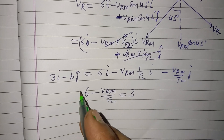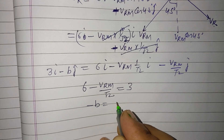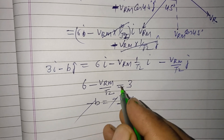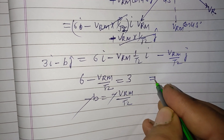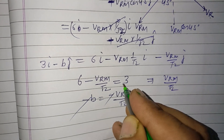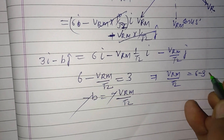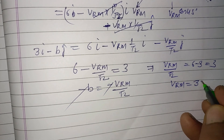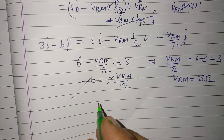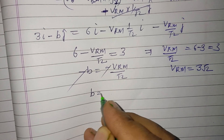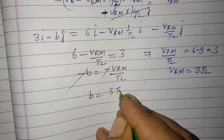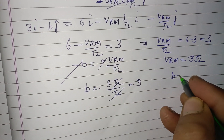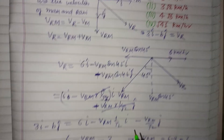Comparing both vector components: from the i-cap component, 6 minus b_RM upon root 2 equals 3, so b_RM upon root 2 equals 6 minus 3, which is 3. Therefore, b_RM equals 3 root 2. Substituting this value back, b equals b_RM upon root 2 equals 3 root 2 upon root 2, so b equals 3.